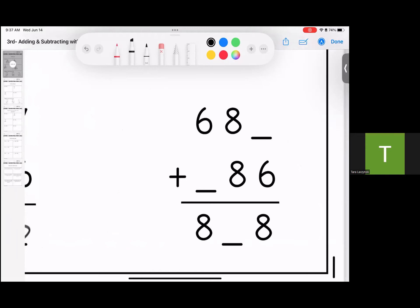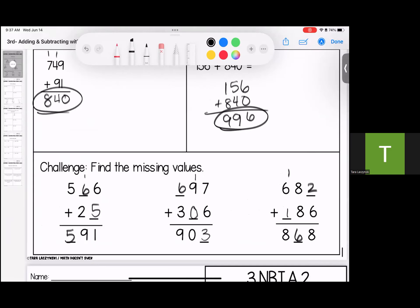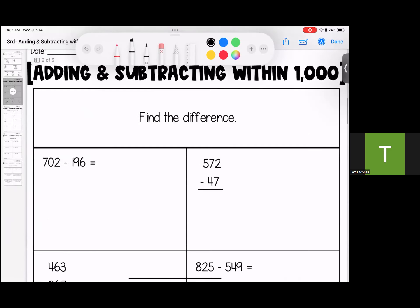Same strategy. 6 plus what gives me 8? It's 2. Oh, I got a little crazy. 8 plus 8 is 16. 6 plus 1 is 7, I need one more to get 8. 682 plus 186 equals 868. Down here, finding the difference or subtracting.